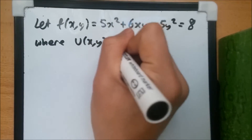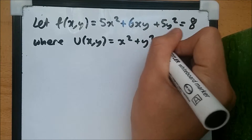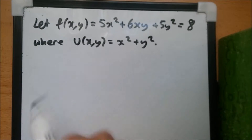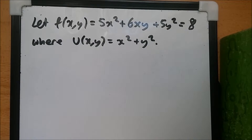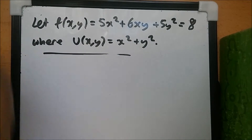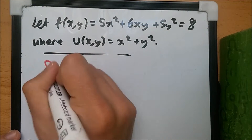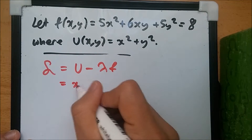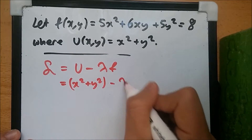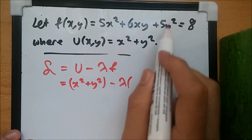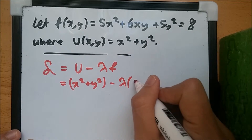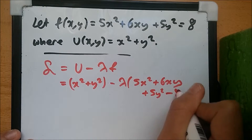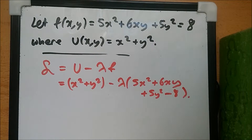The unit circle equation is u = x squared plus y squared, which generally equals 1. So the Lagrangian, according to its definition L = u minus lambda times f, becomes x squared plus y squared minus lambda times the expression. We rearrange to put everything on one side: 5x squared plus 6xy plus 5y squared minus 8.